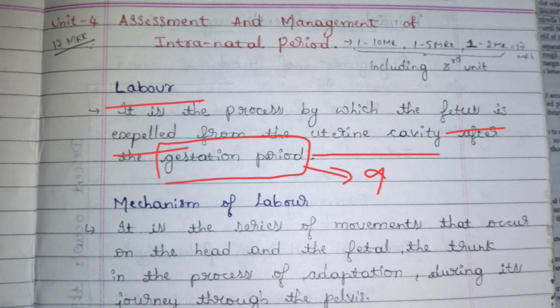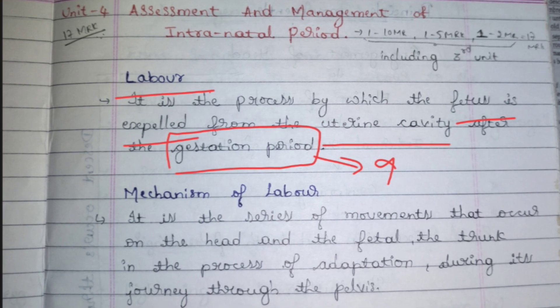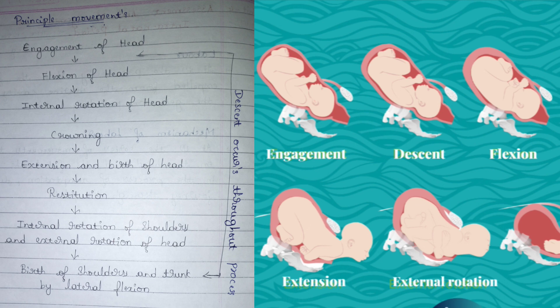Next, the mechanism of labor. The mechanism of labor is the series of movements that continuously take place on the head and the fetal trunk in the process of adaptation during the journey through the pelvis. The birth of the baby starts with the head coming out first from the vagina, then the baby's trunk comes out, and then the legs are delivered. This entire journey is considered the mechanism of labor.